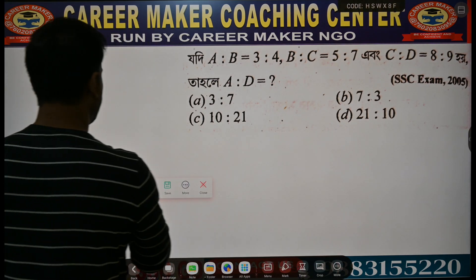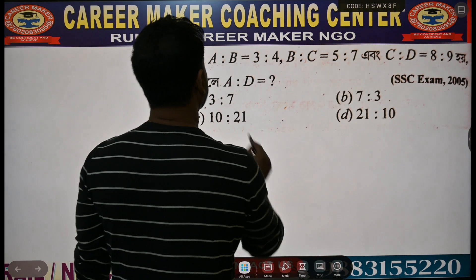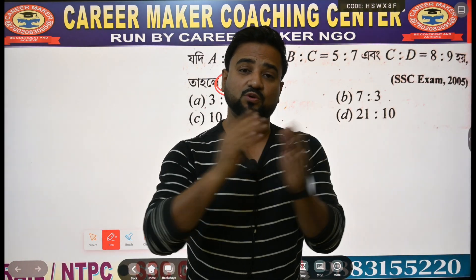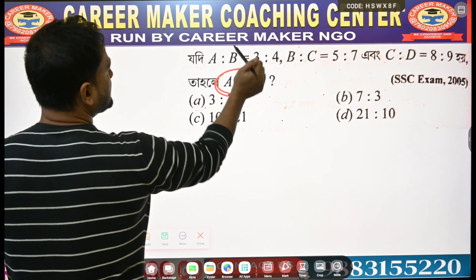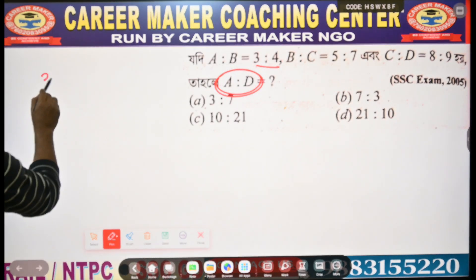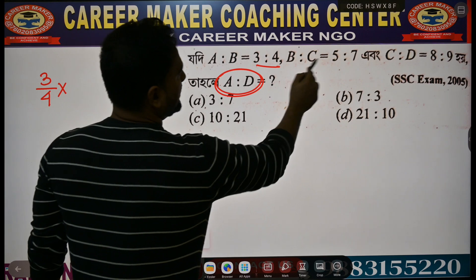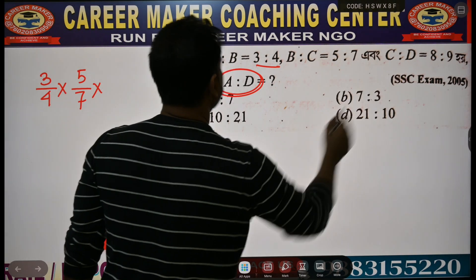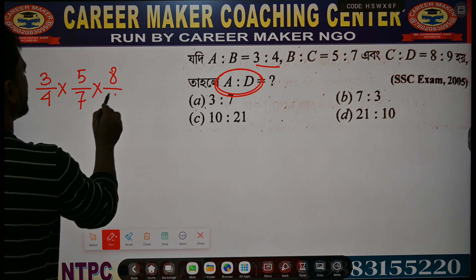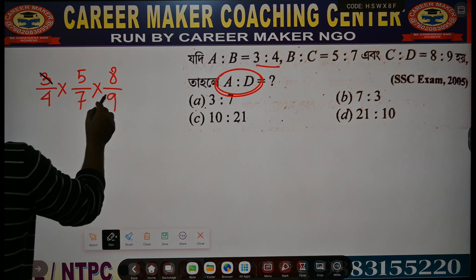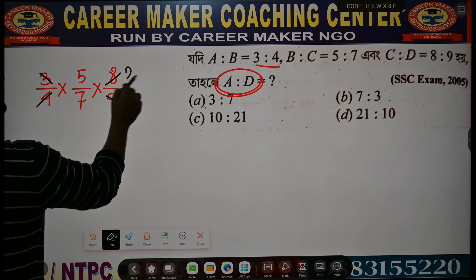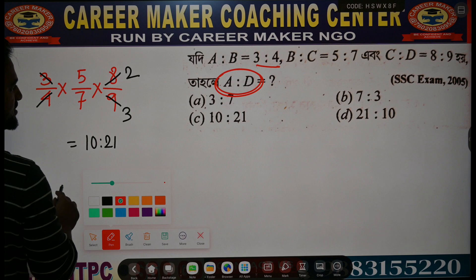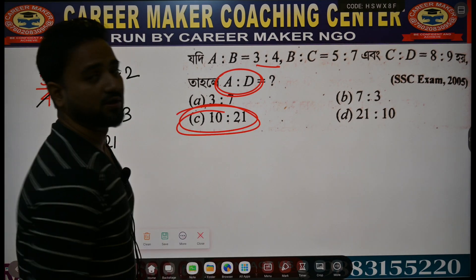B is to C equal to 5 is to 7, and C is to D equal to 8 is to 9. Find A is to D. Multiply through each consecutive pair. First part: 3 is to 4. Cancel and multiply — result is 10 is to 21. Check options — 10 is to 21 is present. Answer is C.